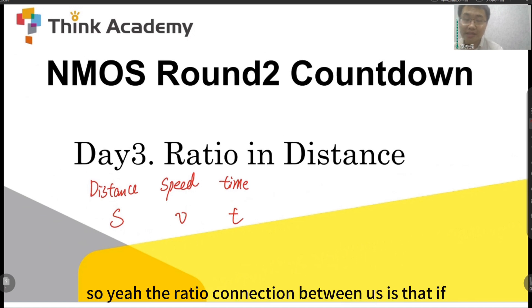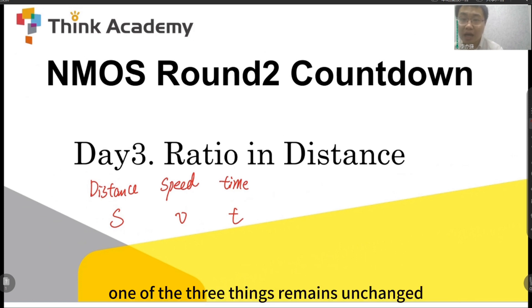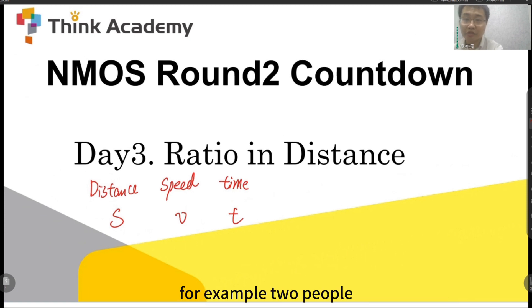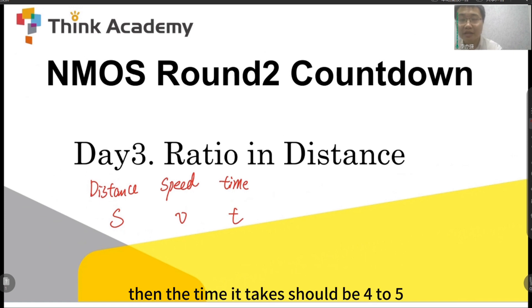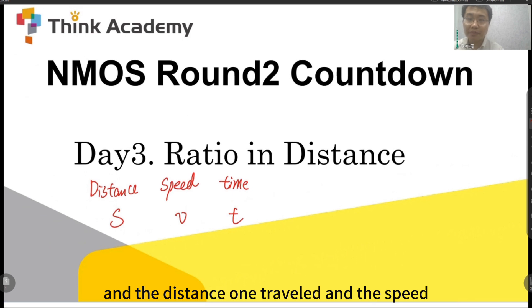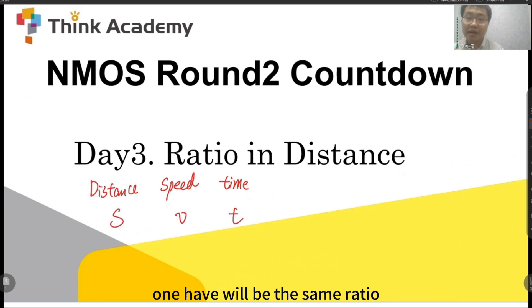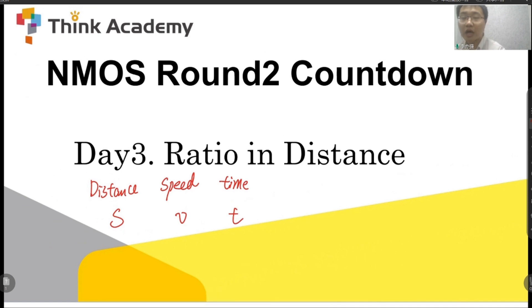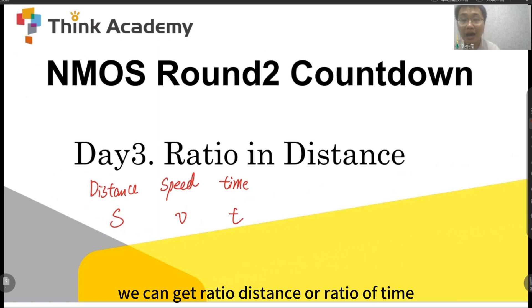The ratio connection is that if one of the three values remains unchanged, then the other two will have a ratio relationship. For example, if the total distance remains unchanged, then speed and time will have an inverse ratio. If two people have a speed ratio of 5 to 4, then the time it takes should be 4 to 5. However, if the time remains unchanged, the distances traveled and speeds will have the same ratio — so a speed ratio of 5 to 4 means a distance ratio of 5 to 4.